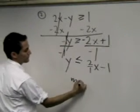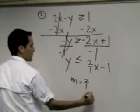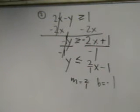So my mountain is 2 over 1 and my beginning point is negative 1. Now the hard part.